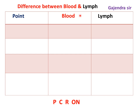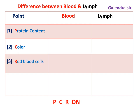The trick PCR ON stands for: P — protein content, C — color, R — red blood cells, and ON — amount of oxygen and nutrients. So the trick is PCR ON: protein content, color, red blood cells, amount of oxygen and nutrients.